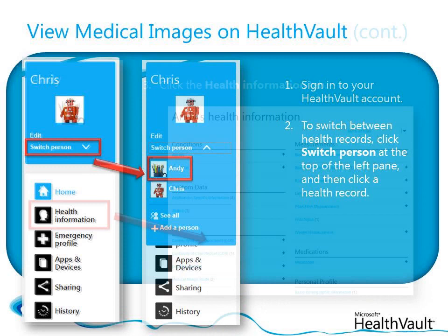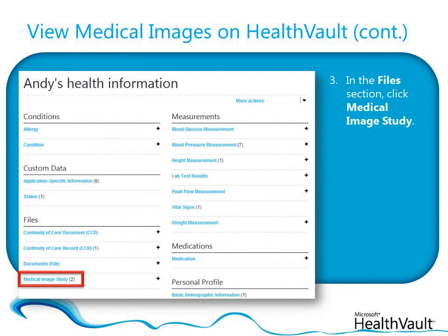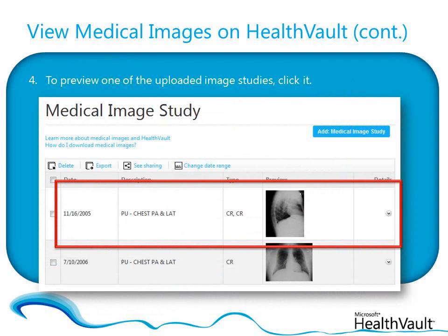Next, click the Health Information tab, which is the main point of access for all the information in the health record. In the Files section, click Medical Image Study to see all of the medical image studies uploaded to this health record in a preview list. To view one of the uploaded image studies, click its entry in the list. Medical images that have been uploaded to your HealthVault account can be managed and shared just like any other health information in your account.